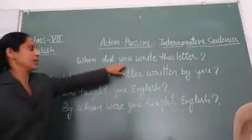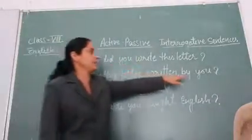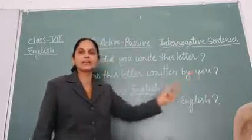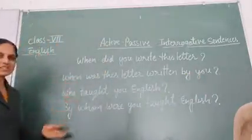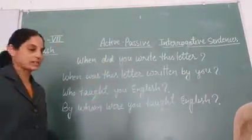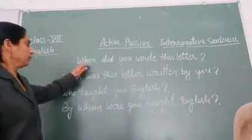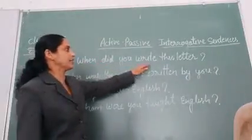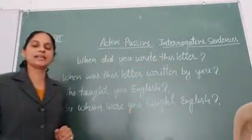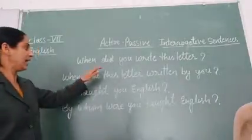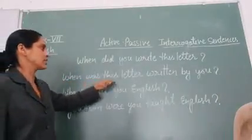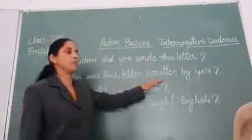Here, 'you' is the subject and 'this letter' is the object. As I explained in previous sentences, when we change 'Why did you write this letter?' into passive voice, it becomes: 'When was this letter written by you?'